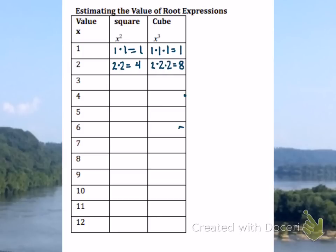Following that pattern, 3 squared is 3 times 3, which is 9. And 3 cubed is 3 times 3 times 3, which is 27. 4 squared is 4 times 4, which is 16.